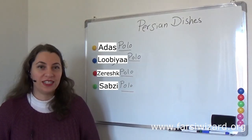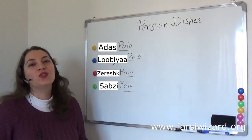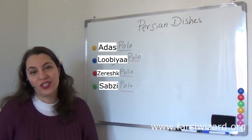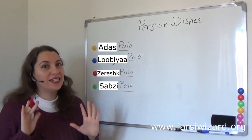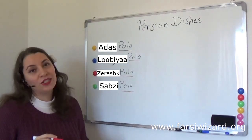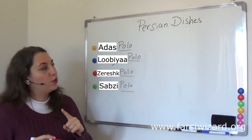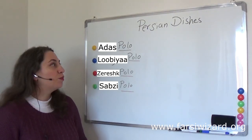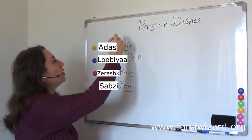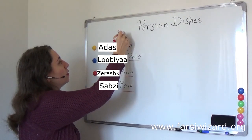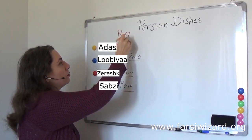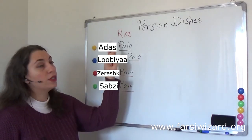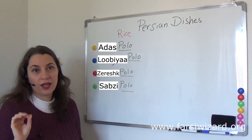Hello and welcome to my Farsi class. Today I am going to teach you about some Persian dishes. Today's lesson is very simple — you basically need to learn one word: polo. Now, what is polo? Polo basically is rice. Be careful with this, because when we say polo is rice, we mean only cooked rice.